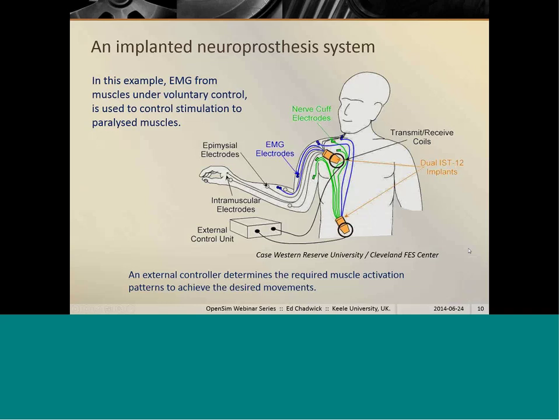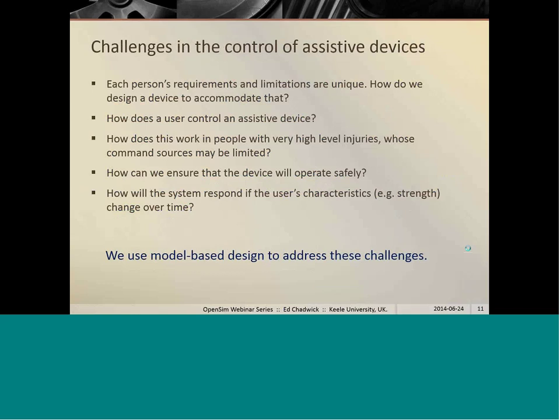So some muscles for a C5 or C6 level injury for example may still be under voluntary control and we can use the EMG signals from those muscles to control the stimulation to the paralyzed muscles to produce a functioning system that facilitates or enables arm movement. Now there's a number of challenges that we have to think about when we're designing a system like that. Each person's requirements and limitations depend on exactly the level of injury, what muscles they have available for stimulation and what can be used for command sources.